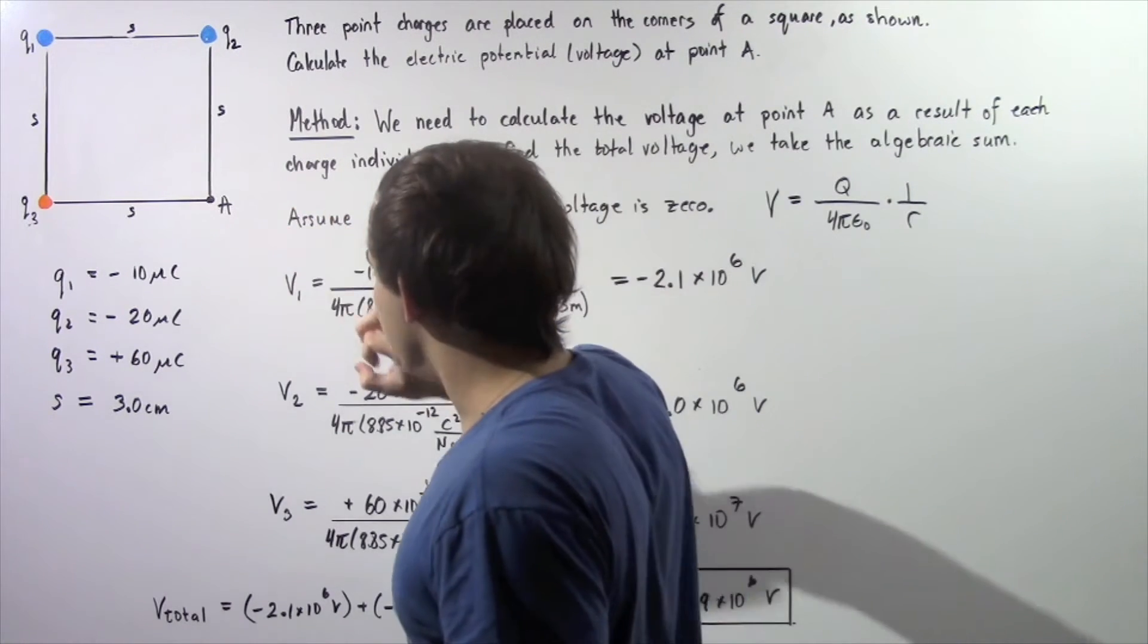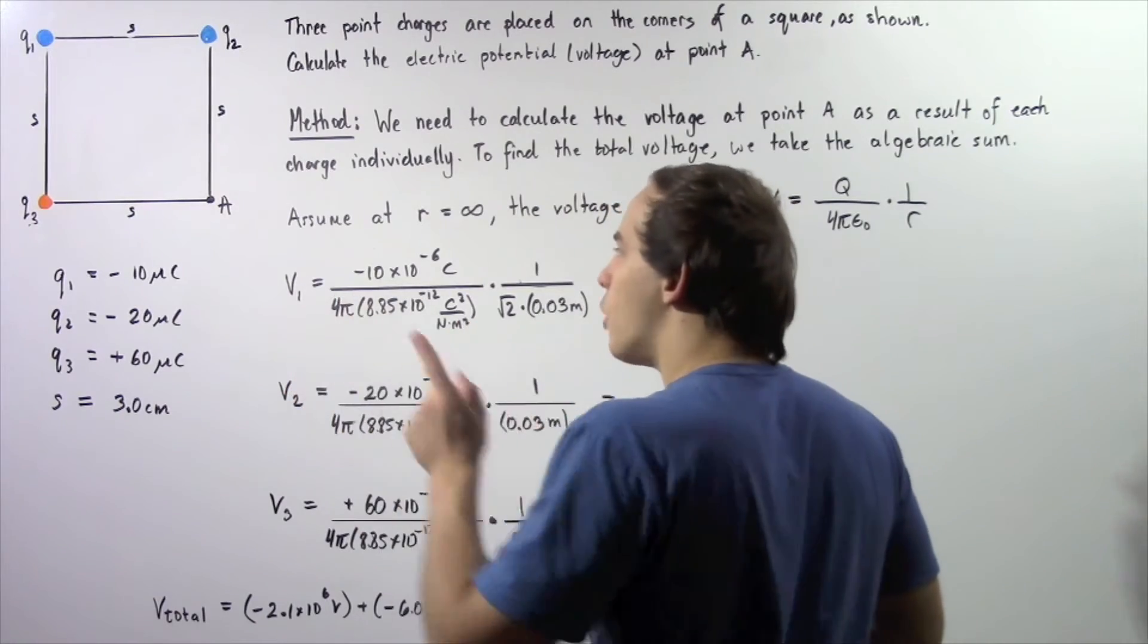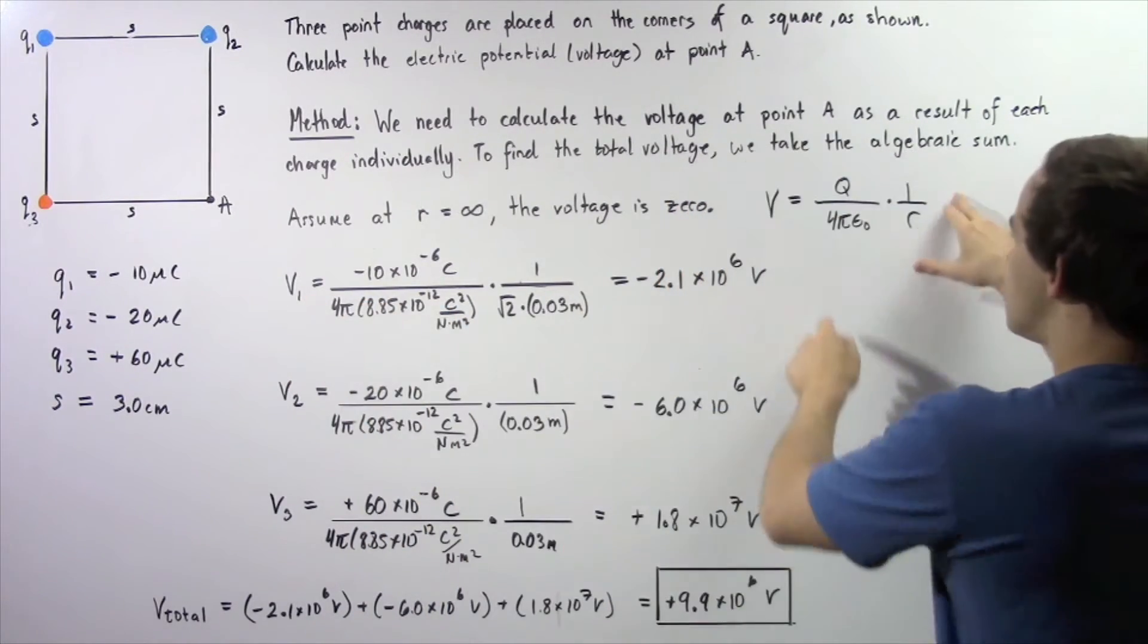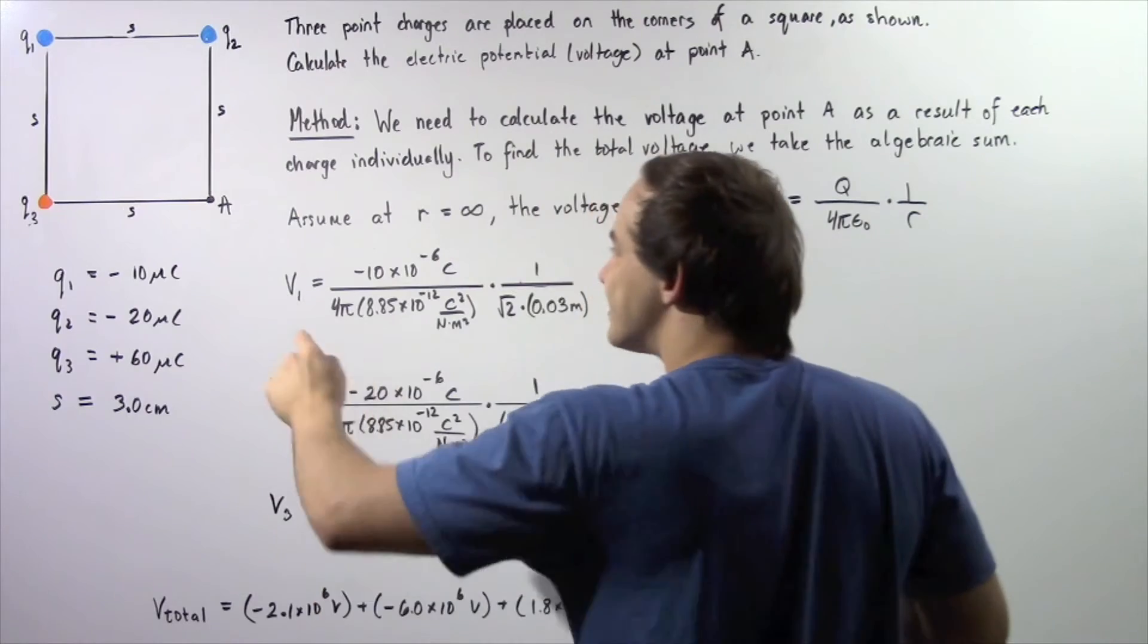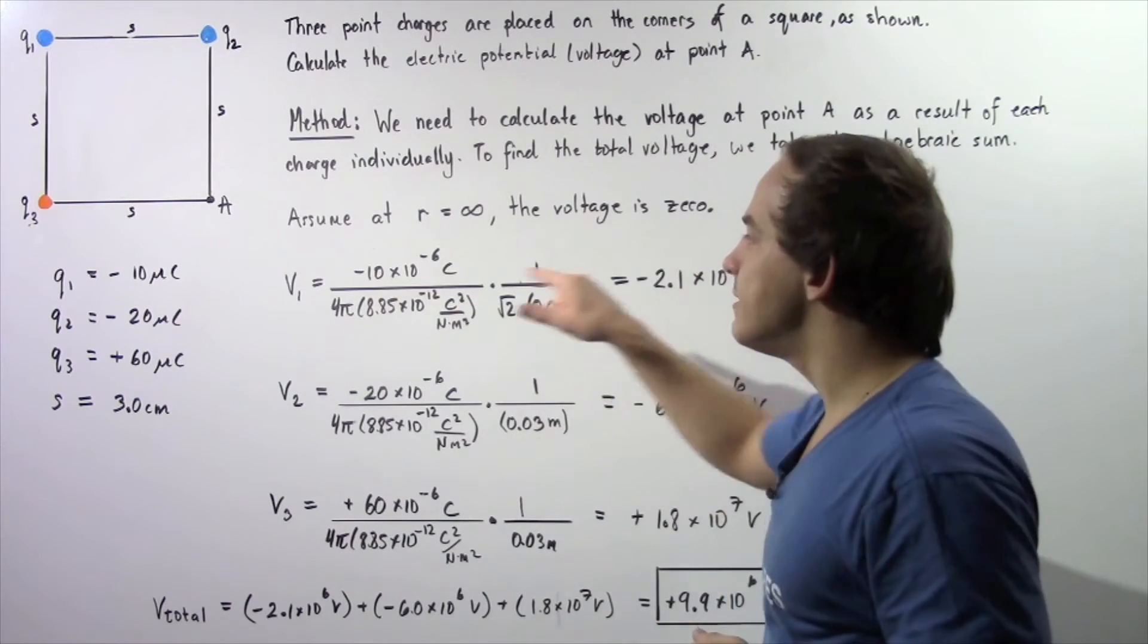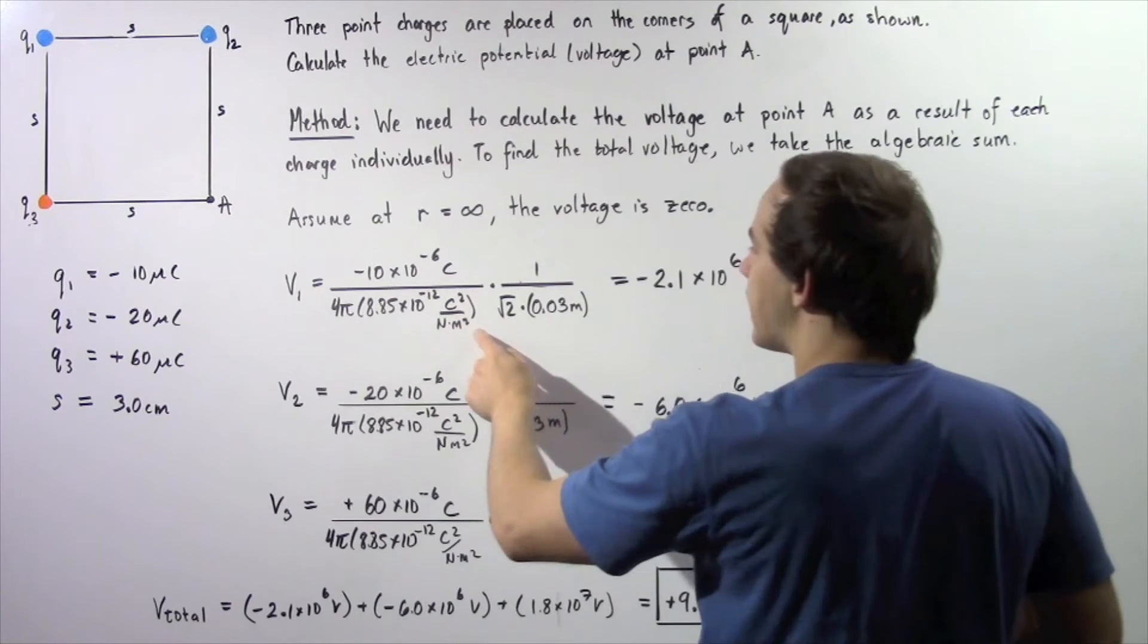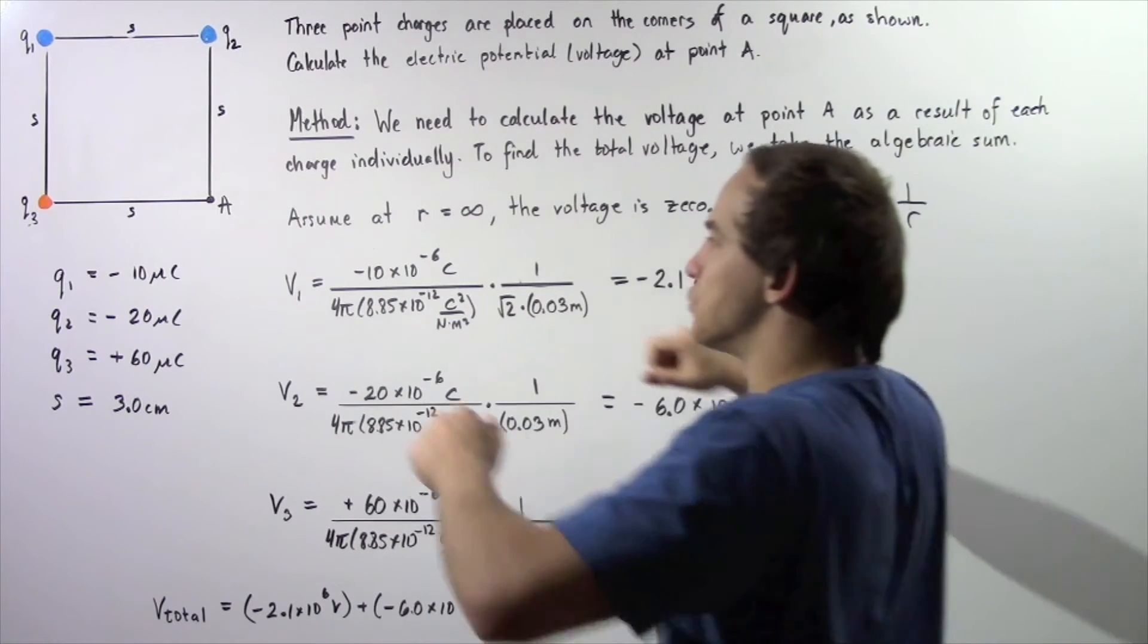Let's begin by calculating each individual voltage as a result of each individual charge. V1 is the voltage at point A as a result of charge Q1. So we use this equation. V1 is equal to the quantity of charge of point charge Q1 given in Coulombs, so negative 10 multiplied by 10 to the negative 6 Coulombs. We divide that by 4 pi multiplied by epsilon naught, which is 8.85 times 10 to the negative 12 Coulombs squared divided by Newtons multiplied by meters squared.